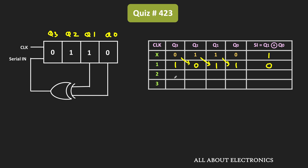That means at the next clock pulse, Q3 becomes 0, and the remaining 3 bits will be right shifted. The 1 shifts over, the content of Q2 comes to Q1, and likewise the content of Q1 shifts to Q0. After the second clock pulse, the output of the XOR gate equals 0 XOR 1, which is equal to 1.